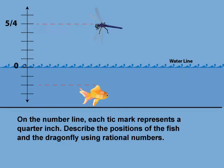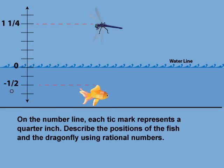Now let's find the position of the fish. Starting at zero, there are 1, 2 tick marks. Since this position is below the zero mark, the number is negative. So the fish is at position negative two-fourths, which is also equal to negative one-half. We rewrite the positions on the number line as a mixed number and a fraction in simplest form. These are rational numbers because they meet the definition of a rational number — even the mixed number can be rewritten as an improper fraction.